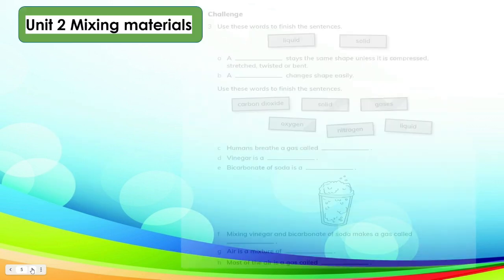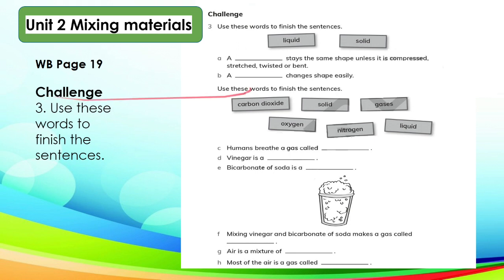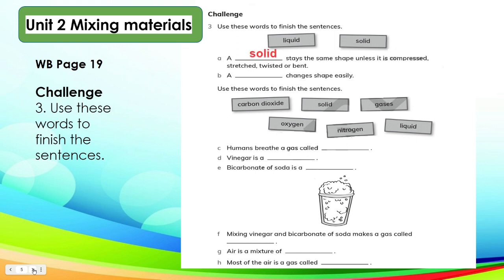In your workbook page 19, Challenge — these questions will make you think deeply. Number 3: use these words to finish the sentences. In letter A, a blank stays the same shape unless it is compressed, stretched, twisted, or bent. Which state of matter is that? It is a solid. Solid stays the same shape unless it is compressed, stretched, twisted, or bent. Letter B: a blank changes shape easily. It's liquid. A liquid changes shape easily.